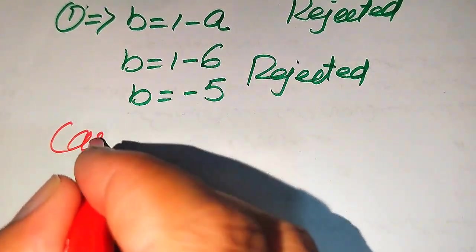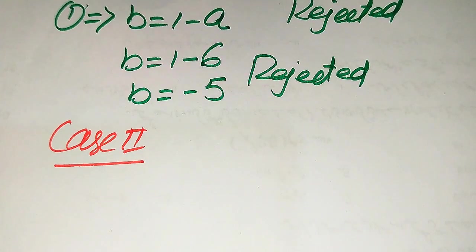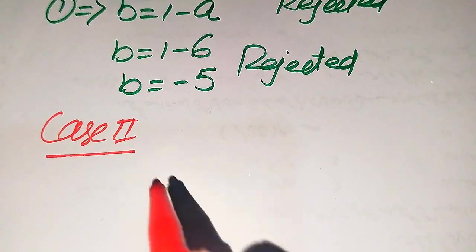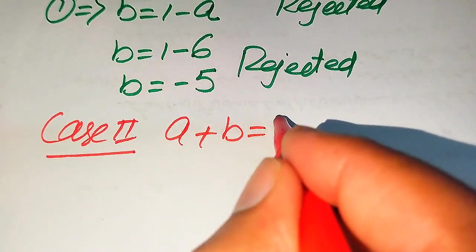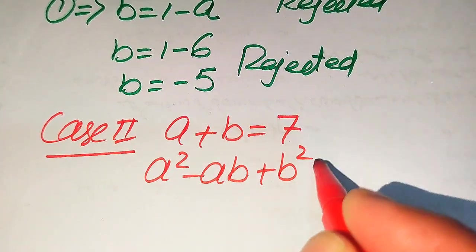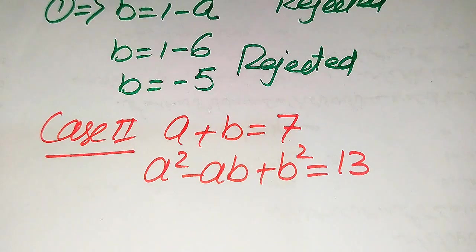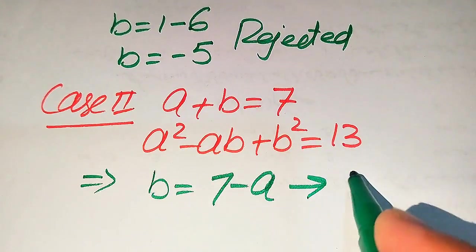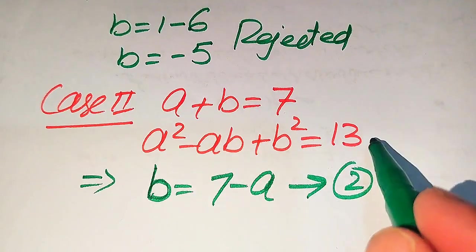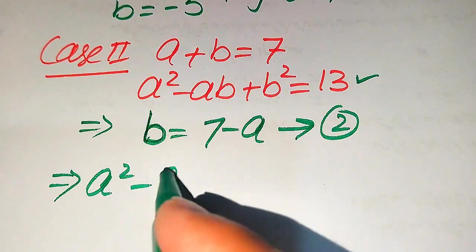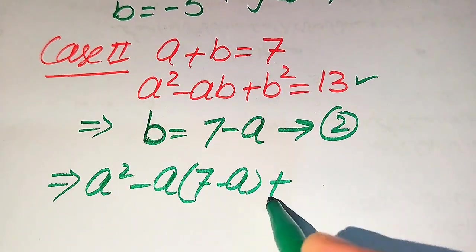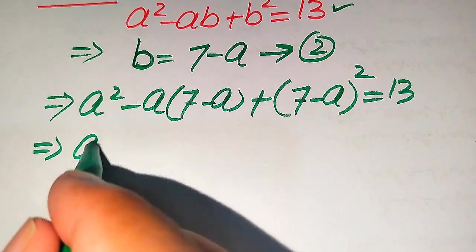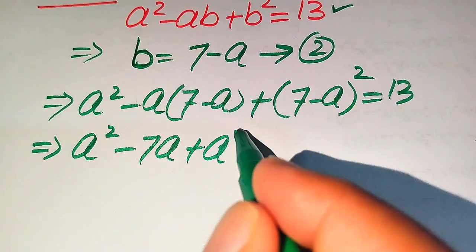Now we move to Case 2. Comparing the factors 7 and 13, we set a + b equals 7 and a² - ab + b² equals 13. From the first equation, b equals 7 minus a — call this equation 2. Substituting into the second equation: a² - a(7 - a) + (7 - a)² equals 13.